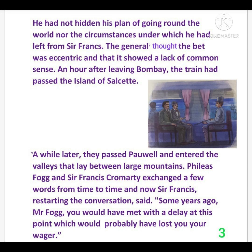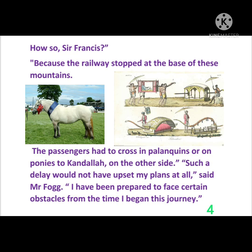Sir Francis restarted the conversation and said, 'Some years ago, Mr. Fogg, you would have met with a delay at this point which would probably have lost you your wager.' After hearing those words, Phileas Fogg was shocked and asked why. Sir Francis replied that the railway stopped at the base of these mountains, and passengers had to cross in palanquins or on ponies — ponies being small horses — to Kandala on the other side. Fogg replied that such a delay would not have upset his plans at all, because he had been prepared to face certain obstacles from the time he began the journey.